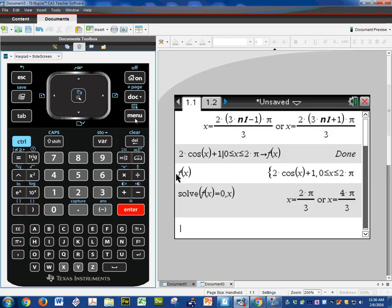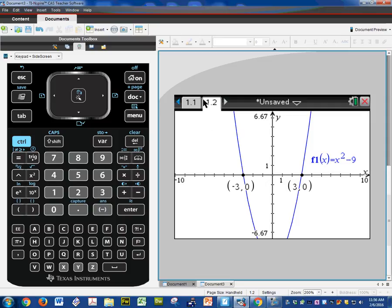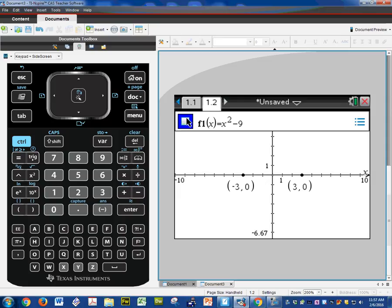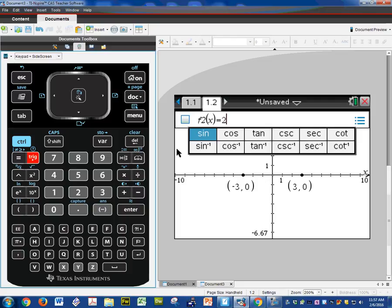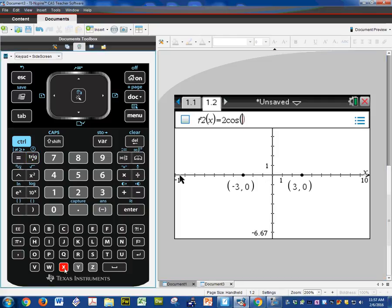So the other option is to graph it. So here's my graph. I go here, just uncheck that one. And I'm going to type in 2 cosine x plus 1. Enter.